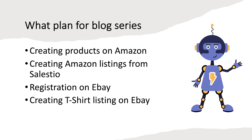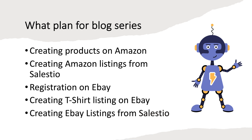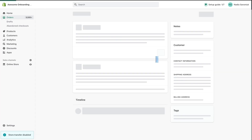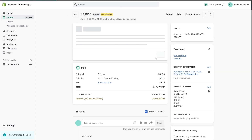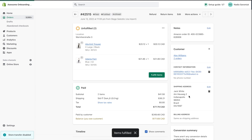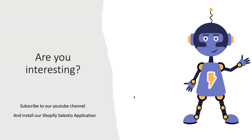We will also show a way of creating a t-shirt listing on eBay and how to connect it to Celestio. As an advanced topic, we will cover creating an eBay listing directly from Celestio. In the last video, we will cover handling orders and fulfillment directly from Shopify and transferring status to all connected parties. Does that sound interesting? Subscribe to our channel so you don't miss any new videos!